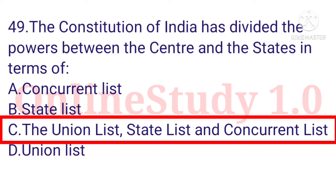Question number 49: The Constitution of India divides powers between the Centre and the States in terms of the Union List, State List, and the Concurrent List.